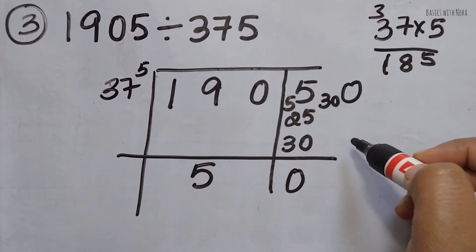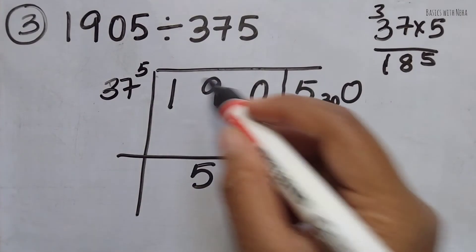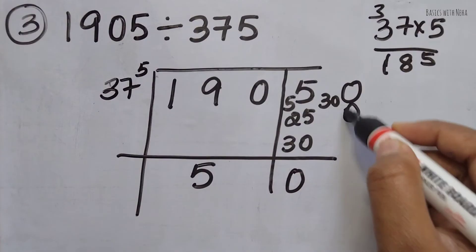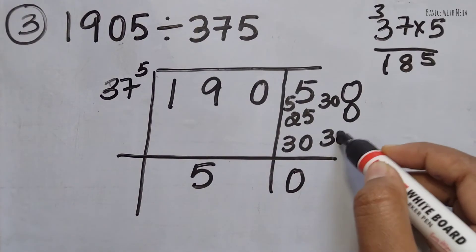So I have 30, I've taken it as the remainder here. Now 5 times 0 is 0. Again, I'm going to take this 300 as it is.